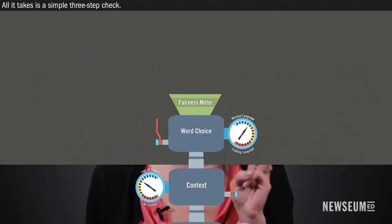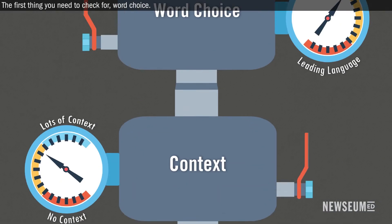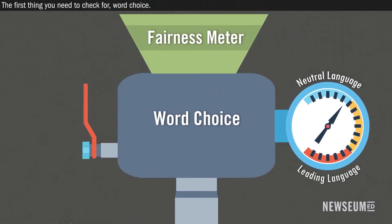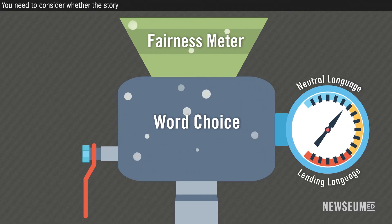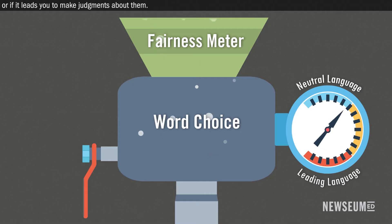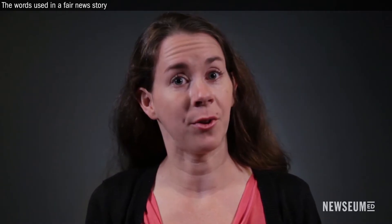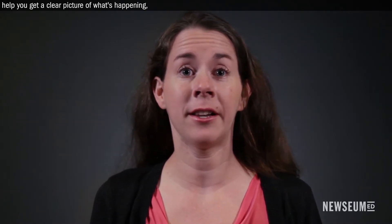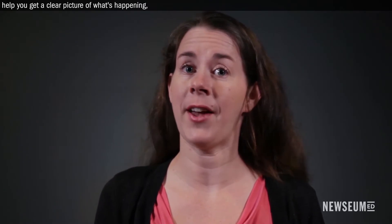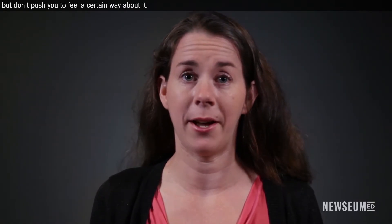All it takes is a simple three-step check. The first thing you need to check for: word choice. You need to consider whether the story simply presents the facts or if it leads you to make judgments about them. The words used in a fair news story help you get a clear picture of what's happening, but don't push you to feel a certain way about it.